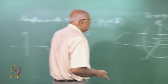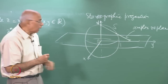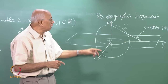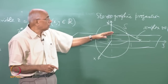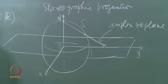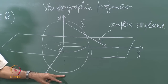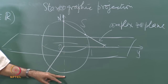Points lying within the unit circle in the complex plane are mapped from points in the southern hemisphere of the Riemann sphere, and all points outside the unit circle are mapped from points in the northern hemisphere. The equator of the sphere corresponds to the unit circle, where mod z equals one. The south pole maps to the origin in the complex plane.